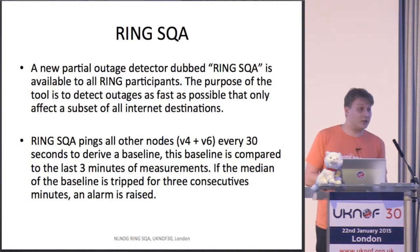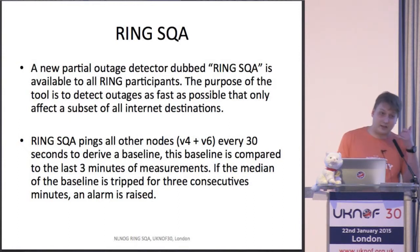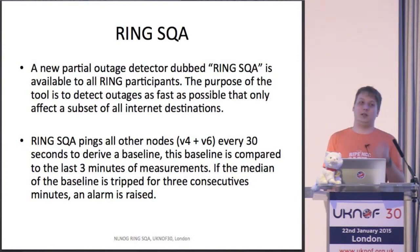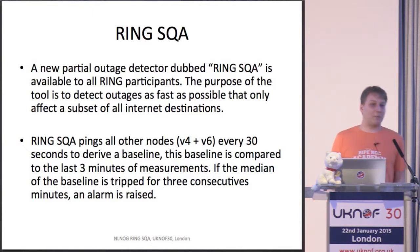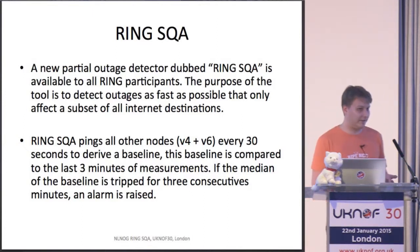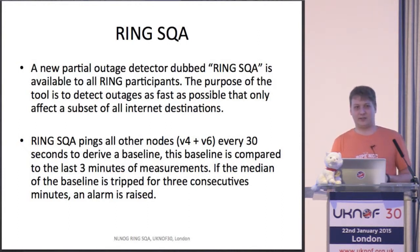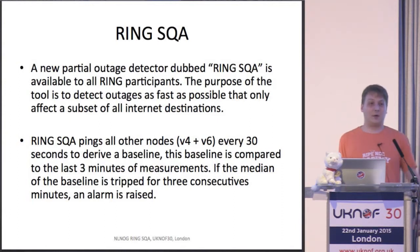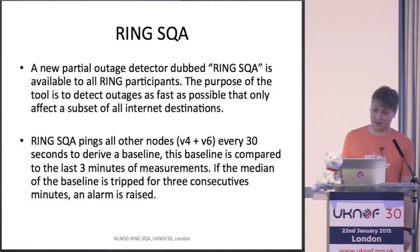It is very easy to detect an entire outage, because your mother will call you and say she cannot retrieve her email. But partial outages that affect maybe 5 to 10% of your internet destinations — those are much trickier to detect. Because you, as a company, won't go out and rent tons of VMs around the world to run your monitoring from. And this is where the ring comes in.